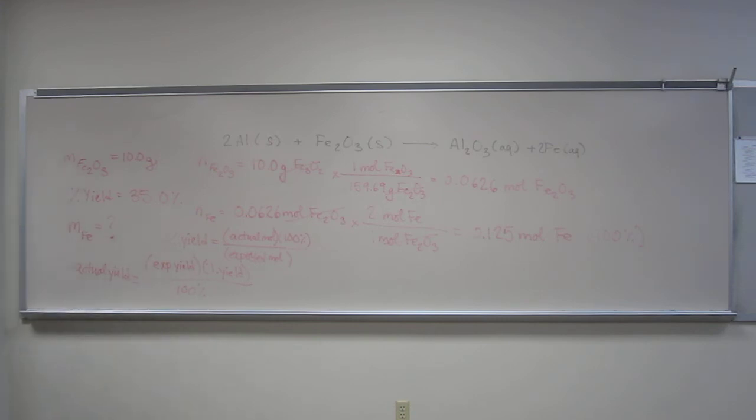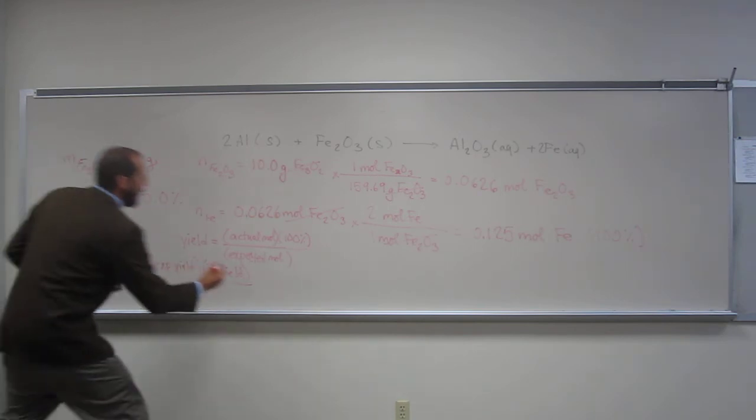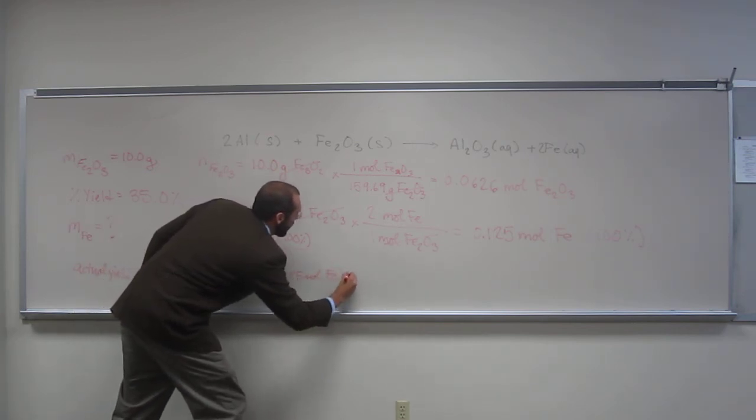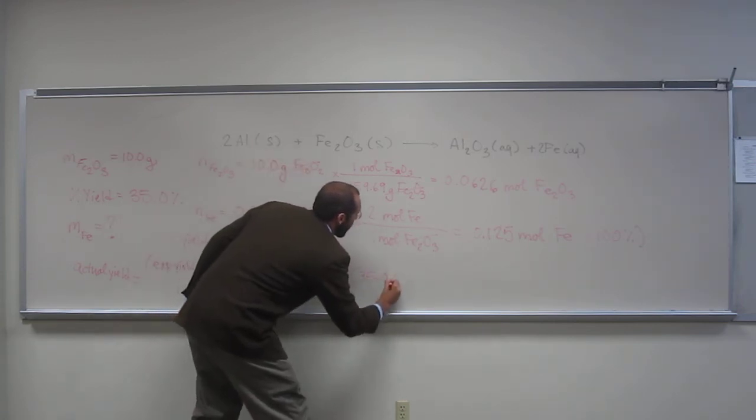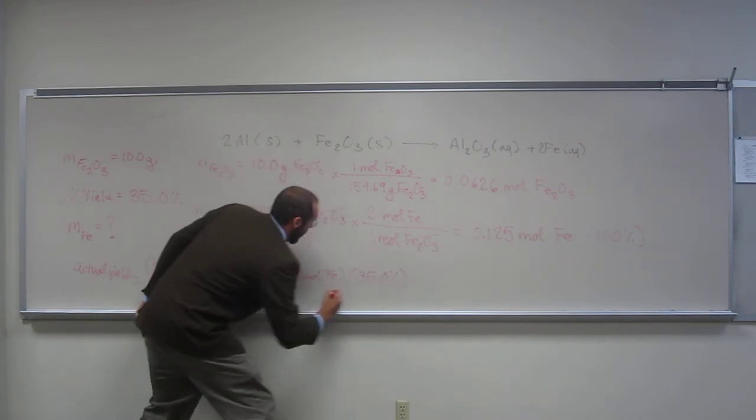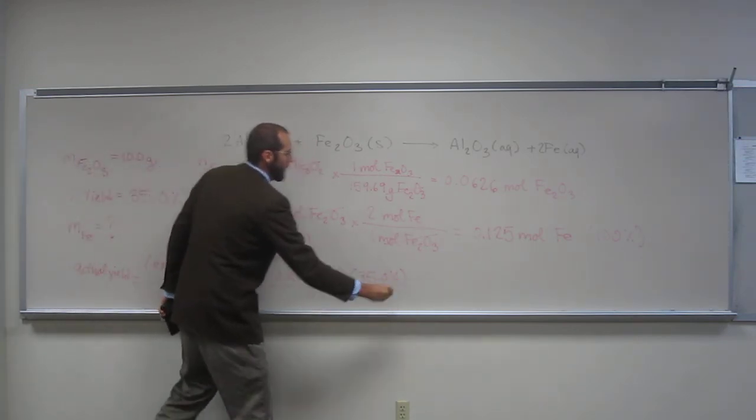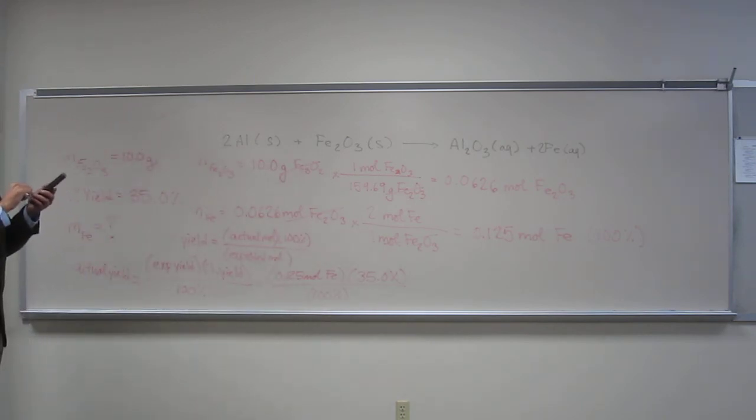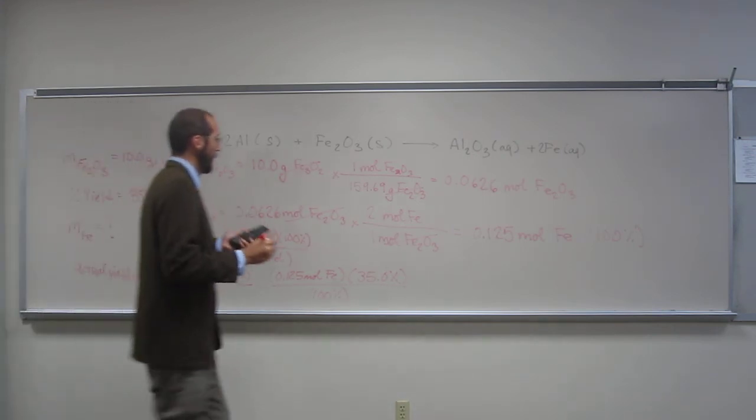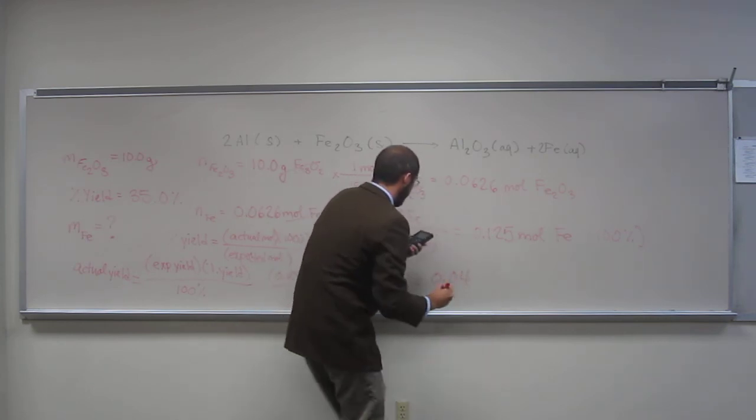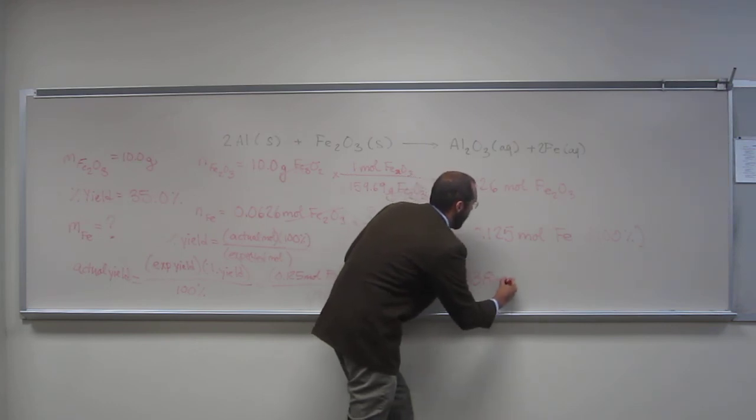The actual yield. Okay. So, when we do that, now this is the actual yield in moles. So, we're going to take that number that's still in our calculator, multiply it. Let's just write it out. So, 0.125 moles iron times 35.0%, right? Divided by 100%, right? So, what cancels out? Good job. Percent. Okay. So, we take that times 35, divided by 100. And that gives us the number 0.0438 moles of iron.